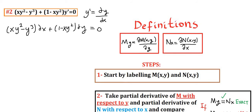Now we can start step 1: label M and N. M is xy² − y³ and N is 1 − xy². Now we take the partial derivatives of M and N to prove whether they are exact or not. Partial derivative of M with respect to y: M_y = 2xy − 3y². And N_x, the partial derivative of N with respect to x: N_x = −y². We see that M_y is not equal to N_x, so it is not an exact differential equation. We have to find an integrating factor.